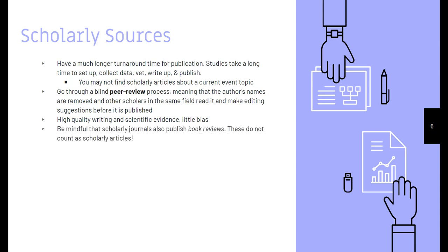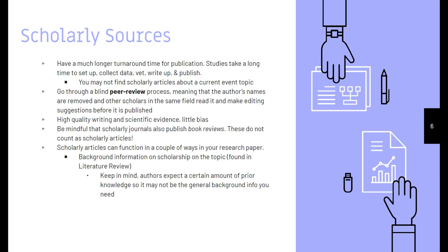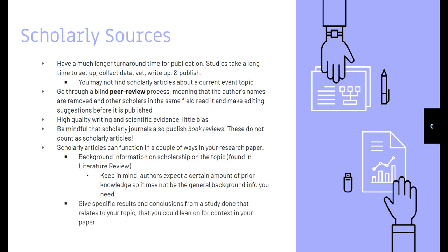Be mindful that scholarly journals also publish book reviews, and these don't count as scholarly articles. If you're accessing through the library's databases, it should be labeled 'book review' somewhere in the article's description. Scholarly articles can function in a couple of ways in your research paper: they might give background information on scholarship up to that point, found in a section called the literature review. Keep in mind authors expect prior knowledge, so it might not be the best place for general background. They might also give you specific results and conclusions from a study that relates to your topic.